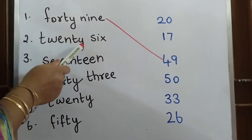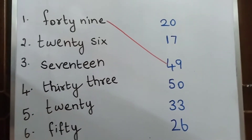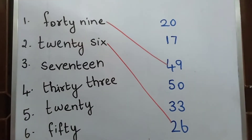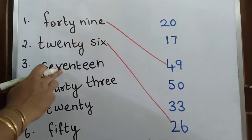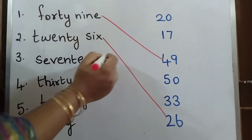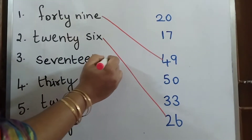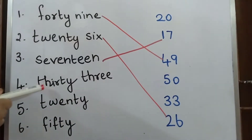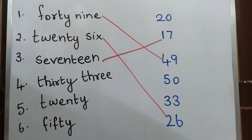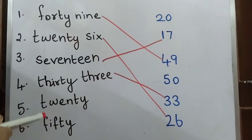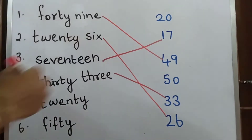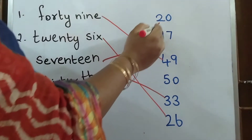T-W-E-N-T-Y is 20, S-I-X is 6, so 26. Match it with the number 26. Then 17 — see where 17 is, match with number 17. T-H-I-R-T-Y T-H-R-E-E is 33. T-W-E-N-T-Y — what is T-W-E-N-T-Y? 20. Can you see 20 here? Match with number 20.